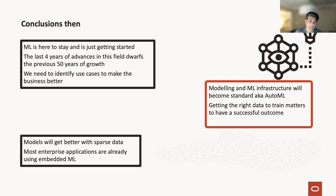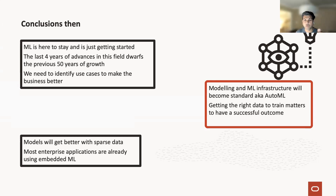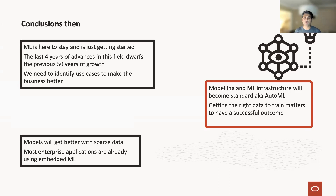There were massive advancements in ML — what happened in the last four years basically dwarfs the past 50 years of growth in this space. Everything like modeling and ML infrastructure will basically become standard. Nobody's going to spend time training a model because the model can be trained automatically using all this AutoML infrastructure. But getting the right data to train matters — that's going to determine whether you'll have a successful outcome. And models will actually get better with sparse data — a very small amount of data required to actually train the model. Most enterprise applications are already going to be using embedded ML.